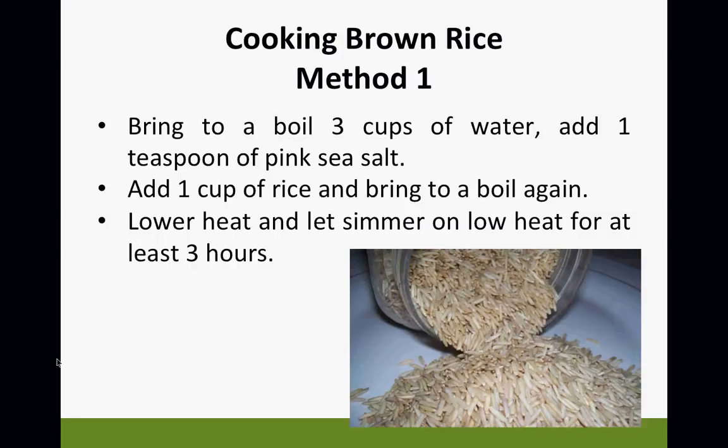Lower the heat and let simmer on low heat for at least three hours. Bring your water and salt to a boil, put your rice in, bring it back to a boil, and once it comes to a boil, turn it down to the lowest setting and just let it simmer. It will not burn and will cook for the full three hours, done perfectly every time.